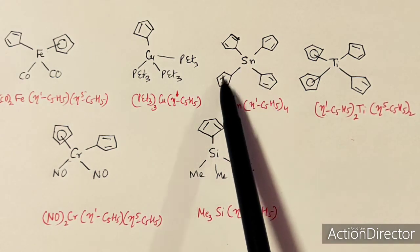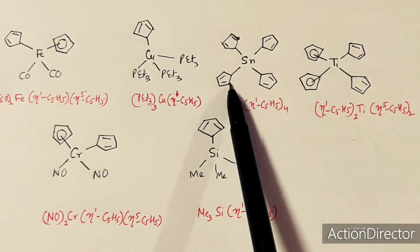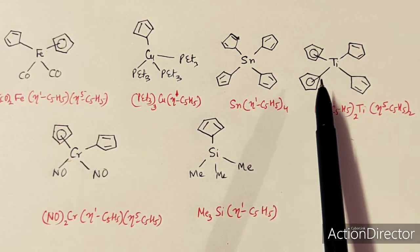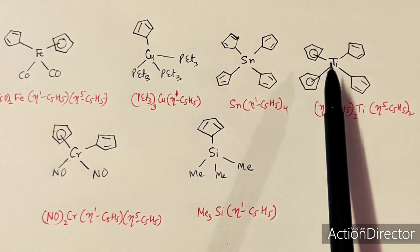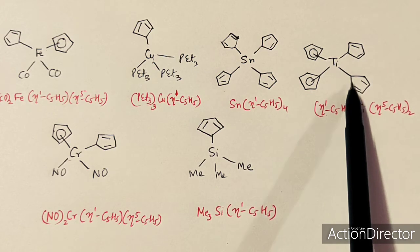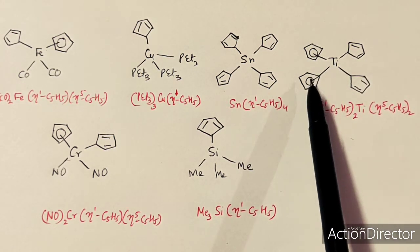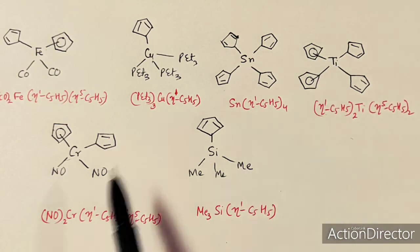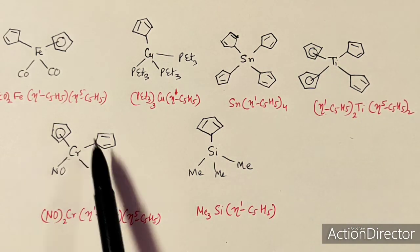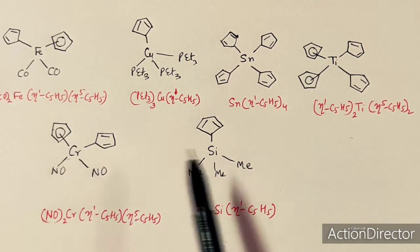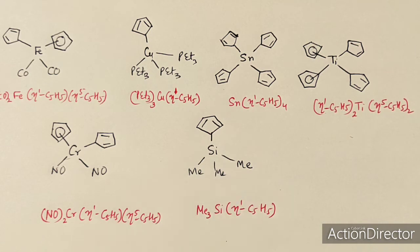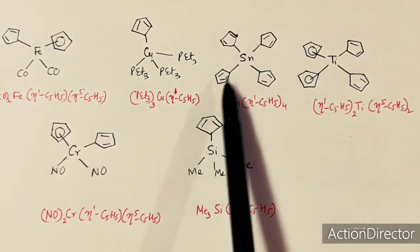In a tin complex, all four cyclopentadienyl rings are joined as η1-C5H5. In a titanium complex, two rings act as η1-type and two act as η5-C5H5, so all five carbon atoms are joined to titanium. There is also a chromium complex with one η1 and one η5 cyclopentadienyl ring, and an example where silicon is attached to the cyclopentadienyl ring through η1 bonding.